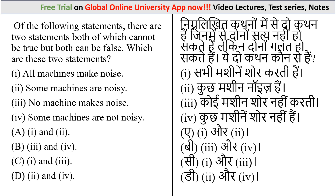This is the last question of today's lecture and you have to answer it: Of the following statements, there are two statements both of which cannot be true but both can be false — which are these two statements? Statements: (1) All machines make noise; (2) Some machines are noisy; (3) No machine makes noise; (4) Some machines are not noisy. Options: A — 1 and 2; B — 3 and 4; C — 1 and 3; D — 2 and 4. Please answer; I will tell you the answer in my next class.